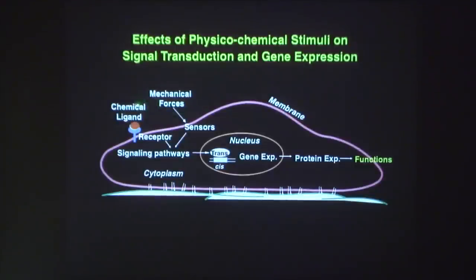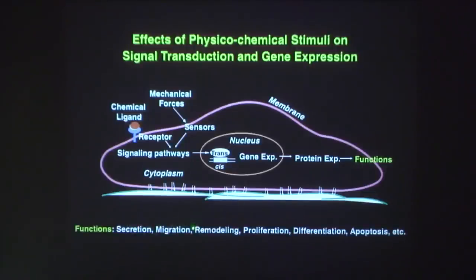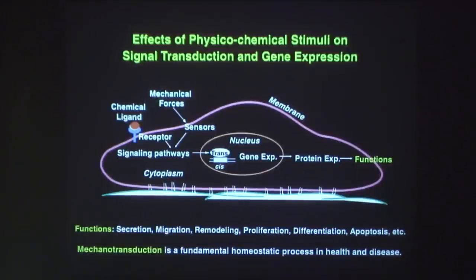LDL and other chemical factors are important in atherogenesis, but these factors are uniform everywhere, and yet the disease is localized in these regions. The main reason is due to the difference in hemodynamic patterns. It is well known that chemical ligands such as growth factors and hormones can interact with receptors to activate cell signaling, but mechanical forces such as pressure and flow can activate sensors similarly to modulate gene expression, protein expression, and modify functions — this kind of mechanotransduction is a fundamental homeostatic process.